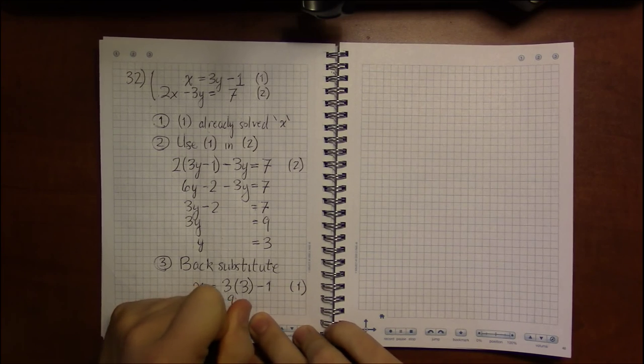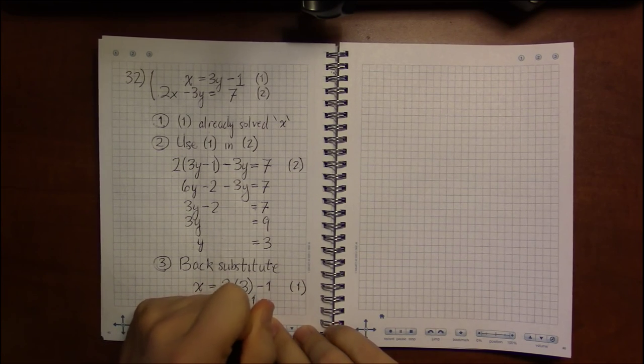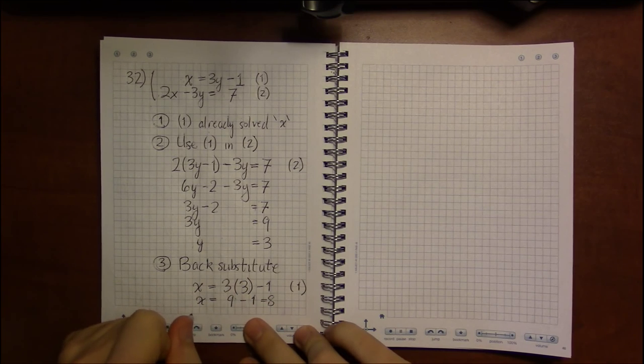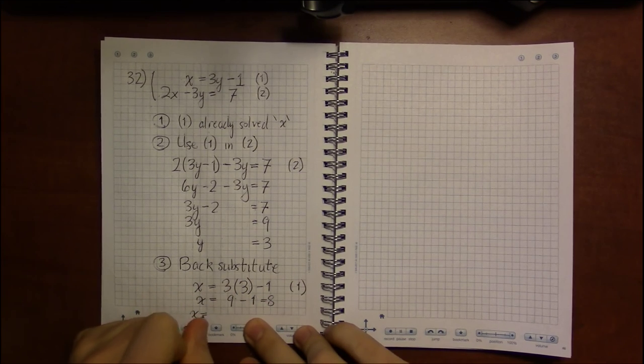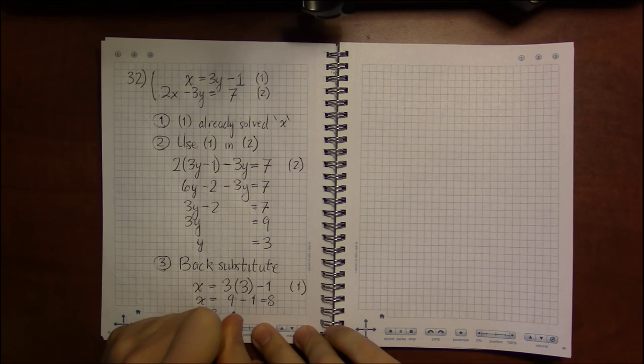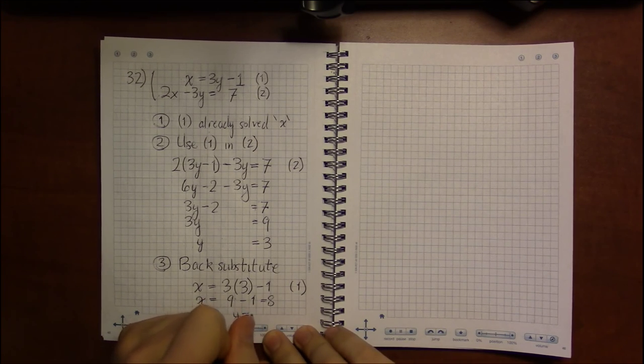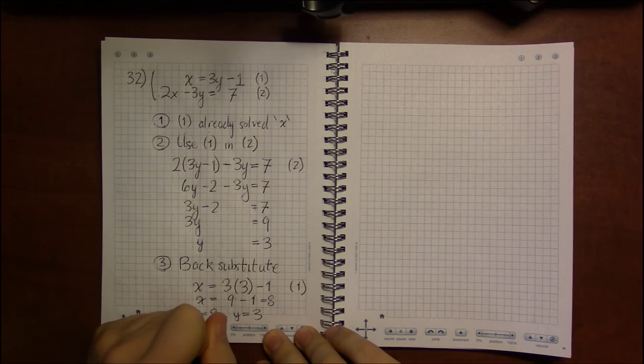So we have x is 9 minus 1, which is 8. So the solution is that x equals 8 and y equals 3.